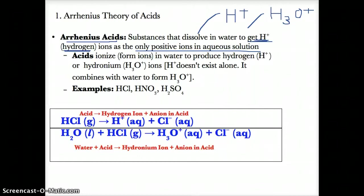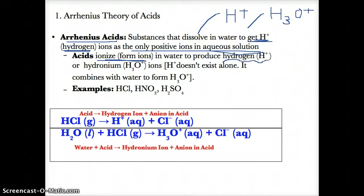The key feature of Arrhenius acids is that they dissolve in water to produce H+, which are hydrogen ions, or H3O+, which are hydronium ions, as the only positive ions in aqueous solution. Arrhenius acids ionize or break apart in water to produce either H+ or H3O+ ions.